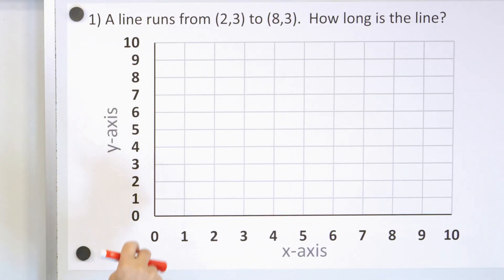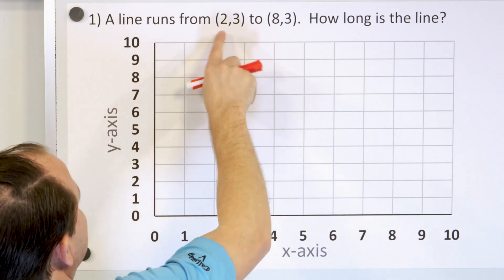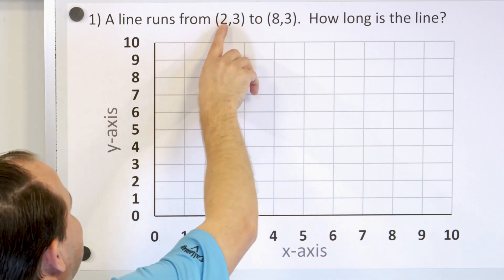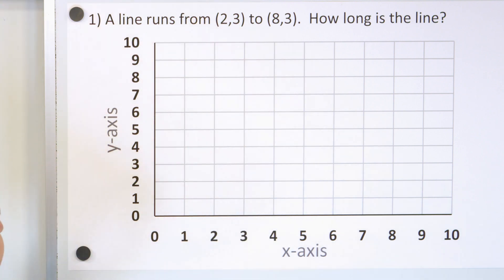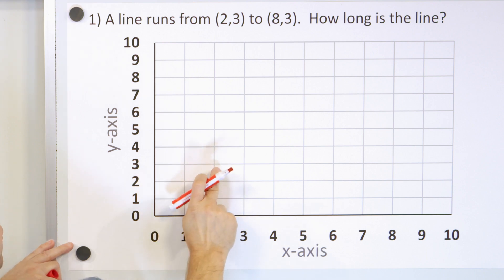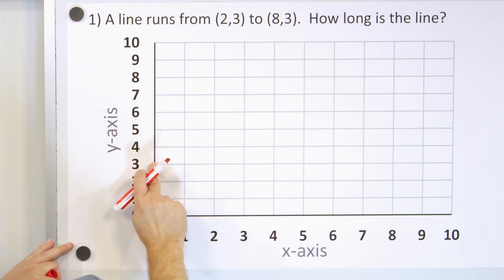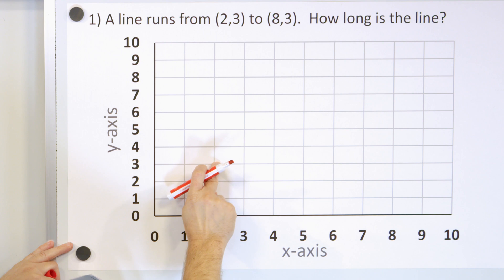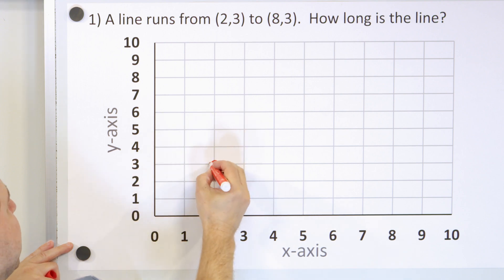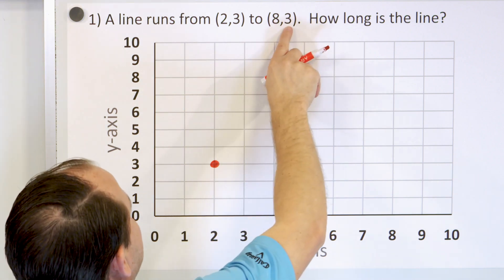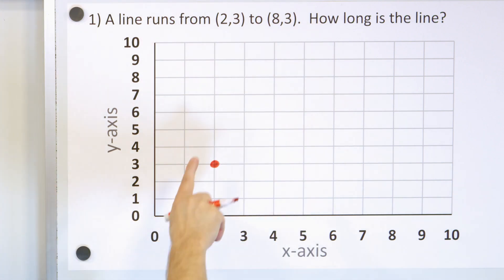The first point is 2,3. So how do we plot that? X is 2, Y is 3. So we go to X is 2 and Y is 3. Always X, Y, remember? 2 is first and 3 is second. So it's 2,3, and there is one end of the line. Next, 8,3 is the end point of the line.